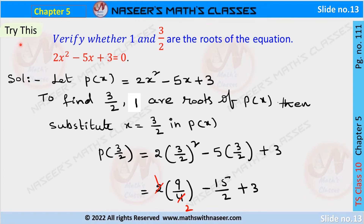We are going to solve page number 111, chapter 5. It is given to verify whether 1 and 3/2 are the roots of the equation 2x² minus 5x plus 3 is equal to 0. To verify this, first let p of x equal to 2x² minus 5x plus 3.